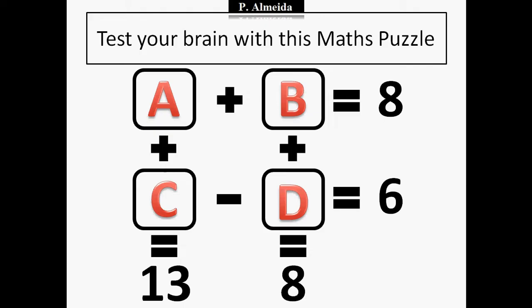So this riddle said that A plus B had to be equal to 8, C minus D had to be equal to 6, A plus C had to be equal to 13, and B plus D had to be equal to 8.